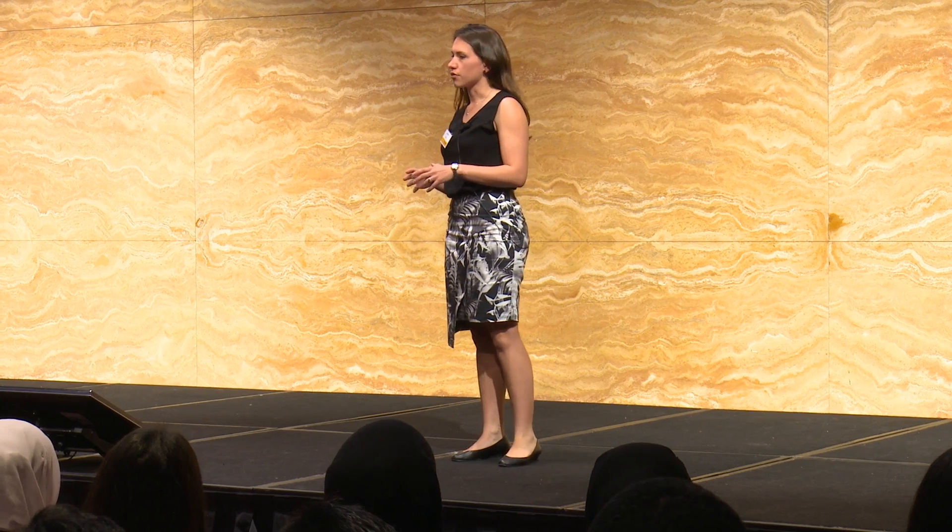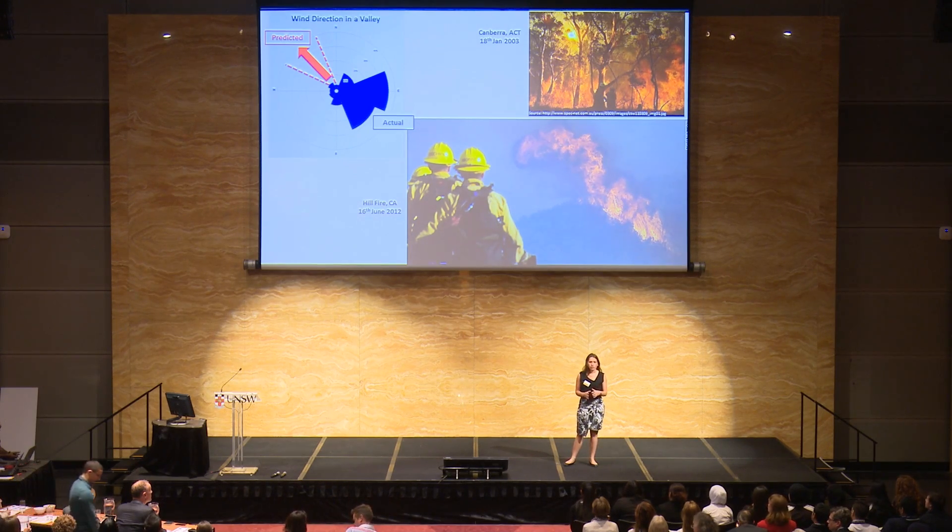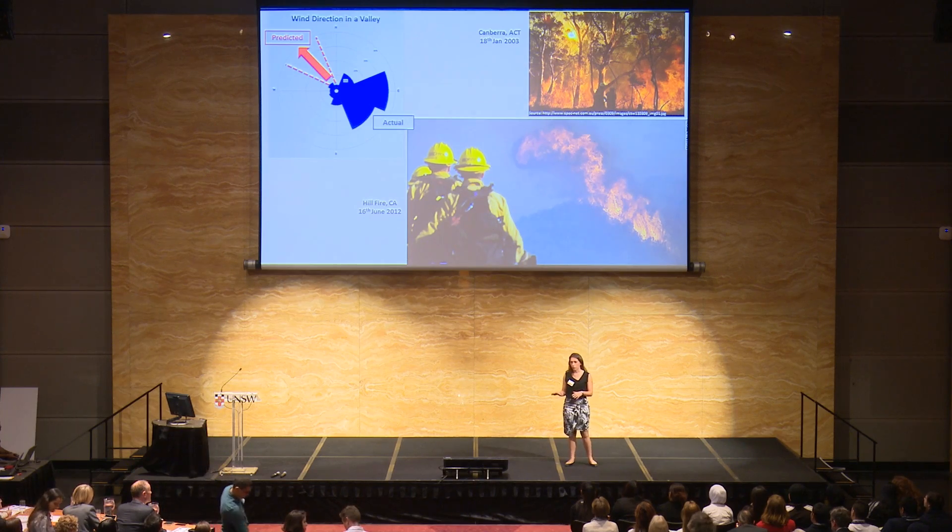Fire management agencies and research groups across the world use numerous different models to understand how fires behave in different environments. In general, it is taken that a fire will spread in the same direction as the wind, at a rate proportional to the wind speed. Now in flat open plains, this is relatively easy to model, but as we move into mountainous areas with steep slopes and deep valleys, we get far more complex wind mechanisms that can create conditions for dangerous and volatile fire behaviour.